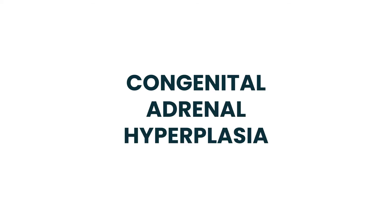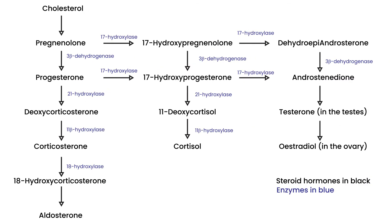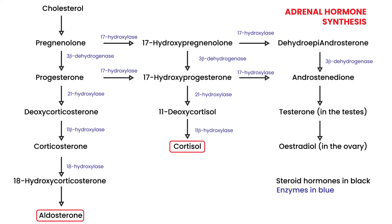Congenital Adrenal Hyperplasia, or CAH, is the topic, and the best way to talk about this is with a diagram. Here is a diagram of the adrenal hormone synthesis, and as you can see, you have cortisol and aldosterone as two of the most important hormones that are synthesized in the body.